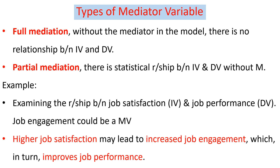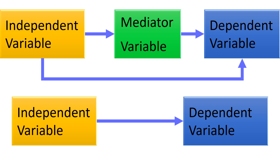For example, examining the relationship between job satisfaction (independent variable) and job performance (dependent variable), job engagement could be the mediator variable. Job satisfaction affects job engagement, and in return job engagement affects job performance — higher job satisfaction may lead to increased job engagement, which in turn improves job performance. In the conceptual framework, one line shows the direct effect of the independent variable on the dependent variable, and another shows the indirect effect through the mediator variable.